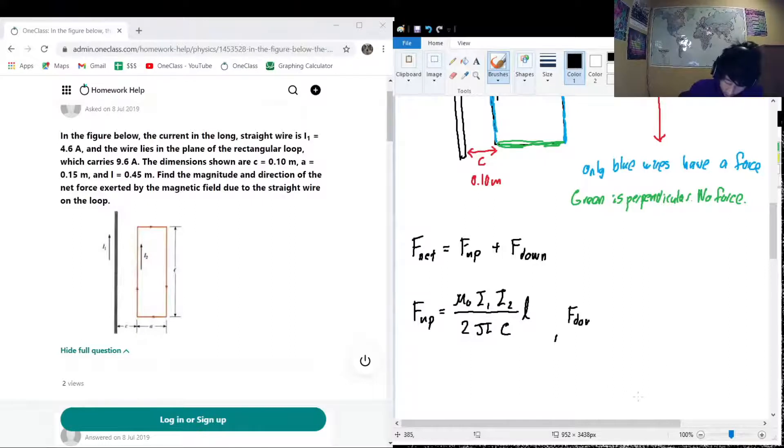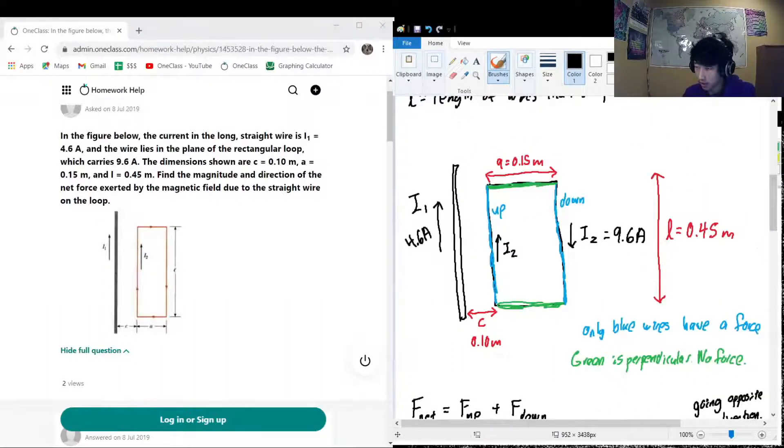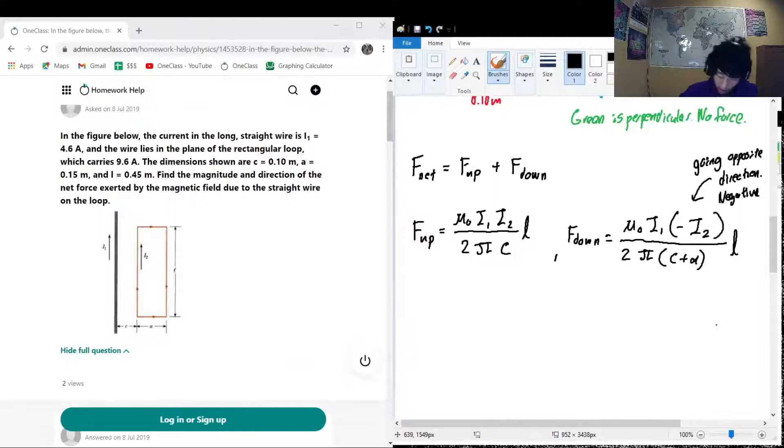f down is going to have a similar equation here. We're going to start it off with mu naught. i1 is the same, but we're going to use negative i2. This is because going down, going opposite direction, it's negative. Because we need these forces to have different signs for this to work out properly. On the downstairs of here, we're going to have two times pi, those are going to be constant and mandatory, but instead of just c, we have to do c plus a. The reason why is because the down section of this square loop is more than, the distance between that and i1 is c plus a. And the length that they are parallel with is also l, so that's going to be the same here.